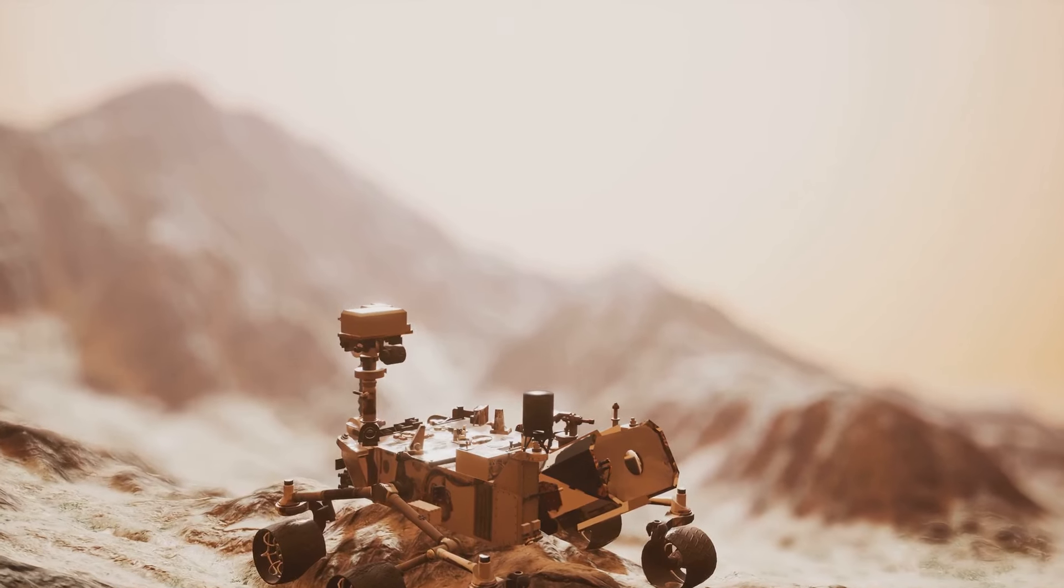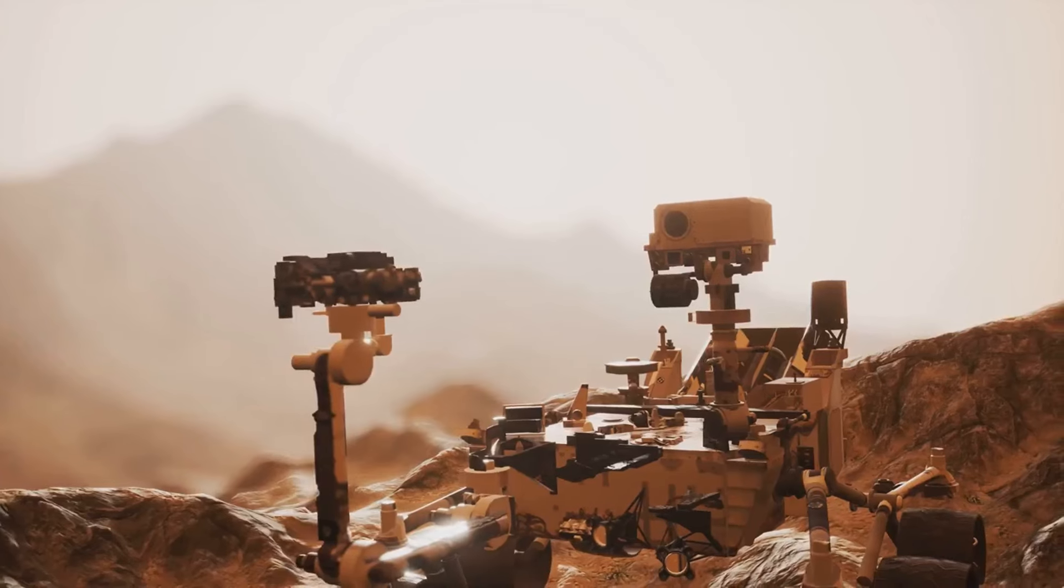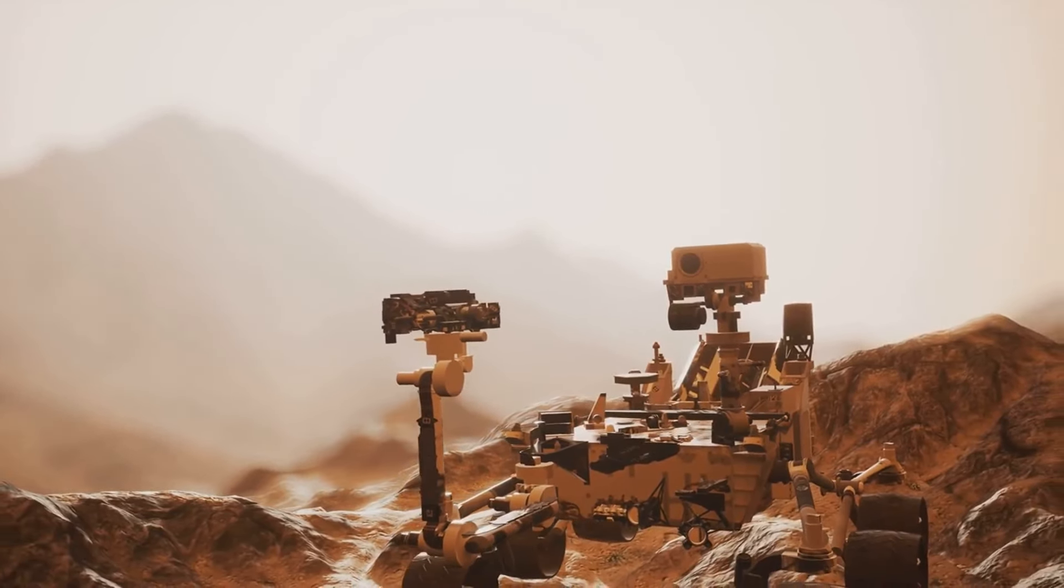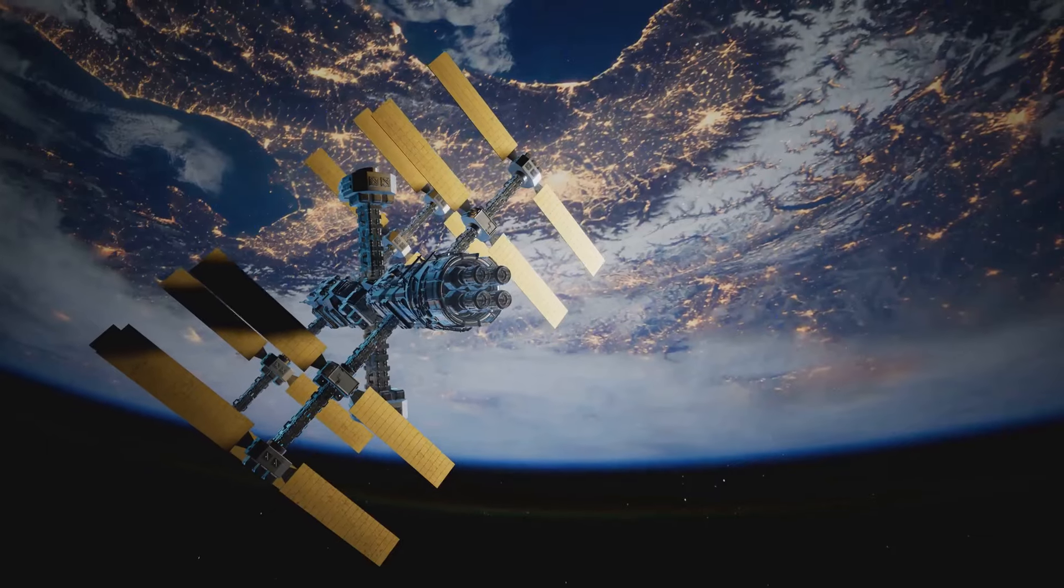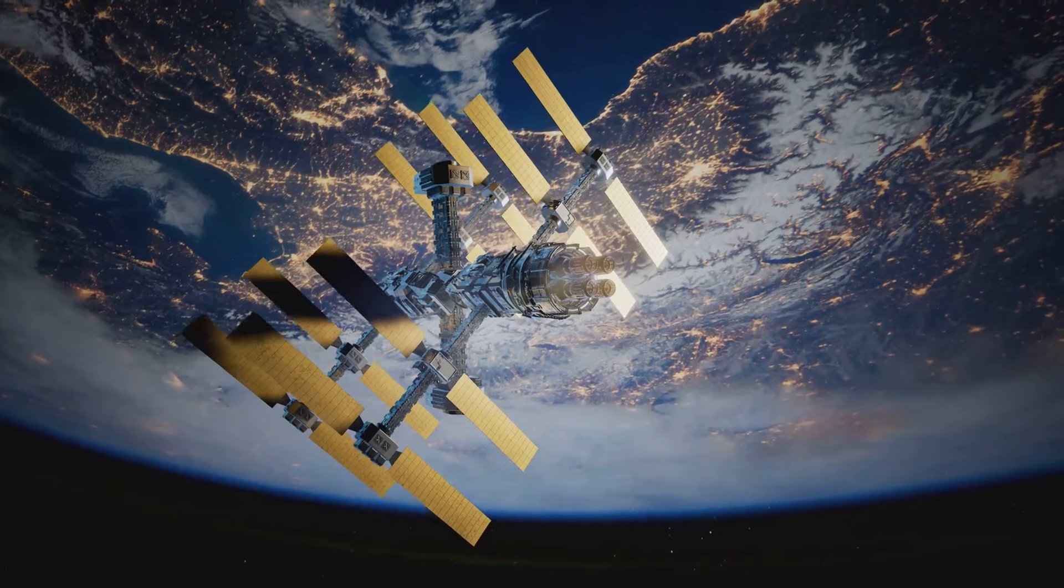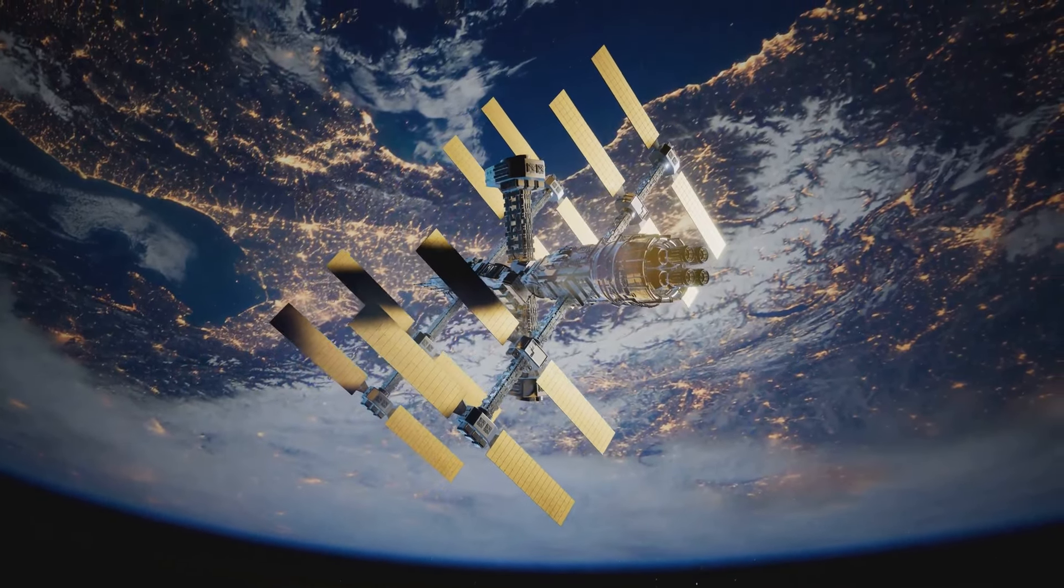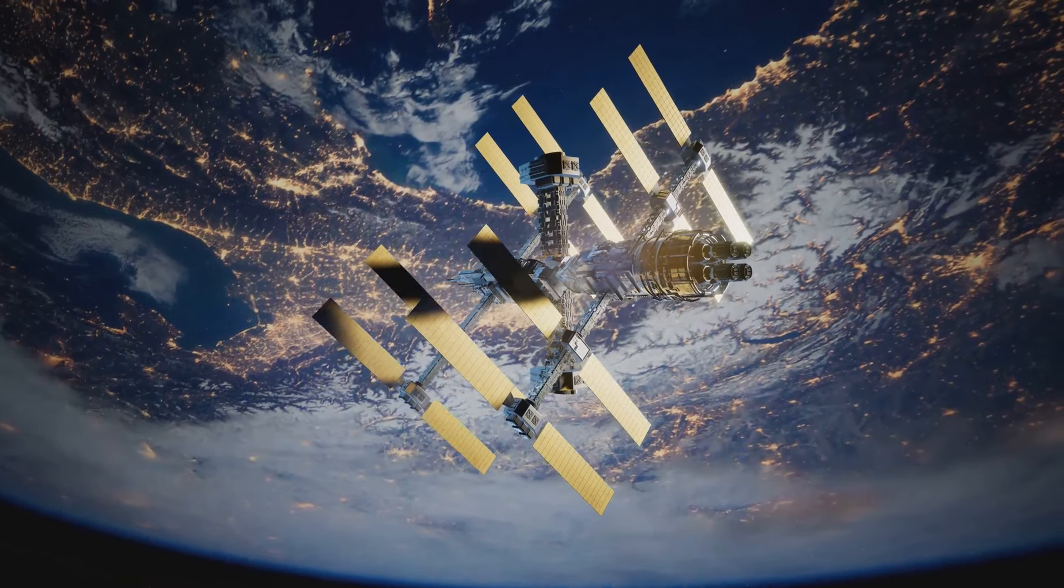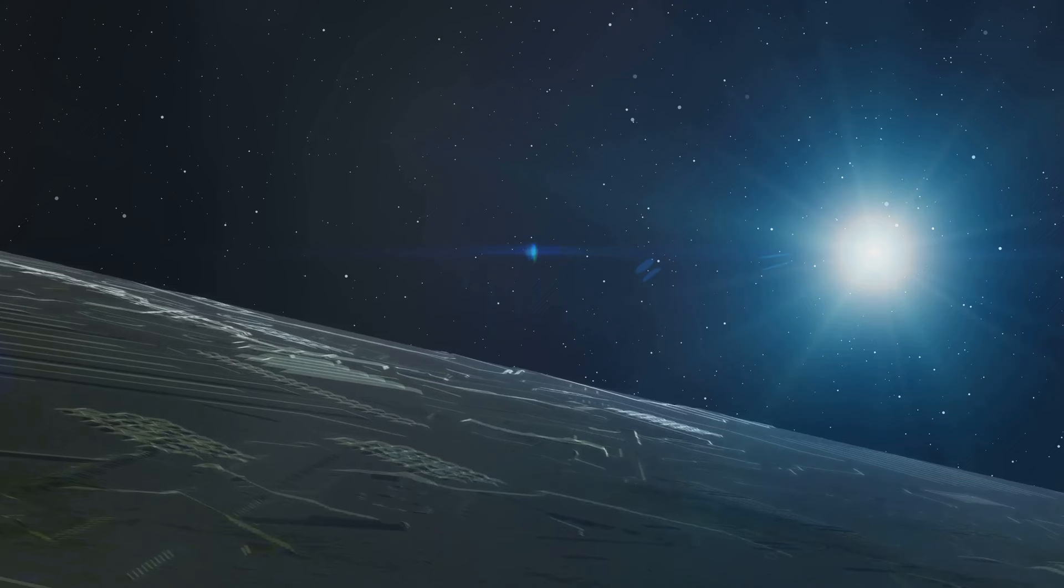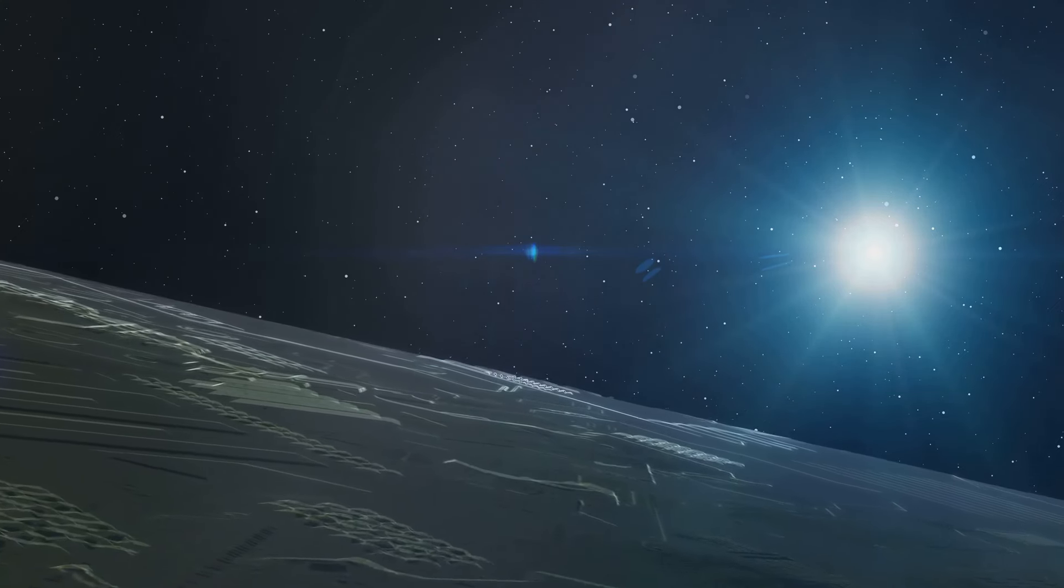Then, there were the Mars rover missions that have been exploring the Martian surface since 2004. These robotic explorers have been pivotal in our search for signs of past or present life on Mars. And let's not forget the International Space Station, a symbol of international cooperation in space. Since its launch in 1998, it has been continuously inhabited, providing a platform for countless scientific experiments.